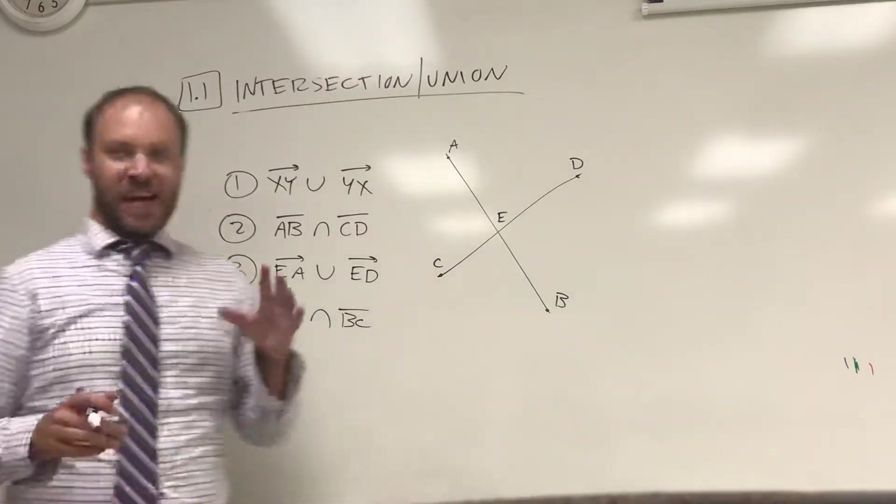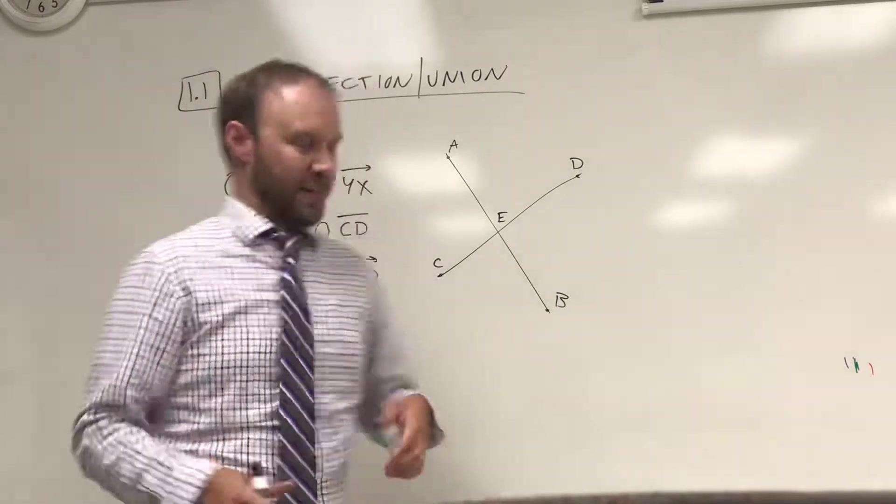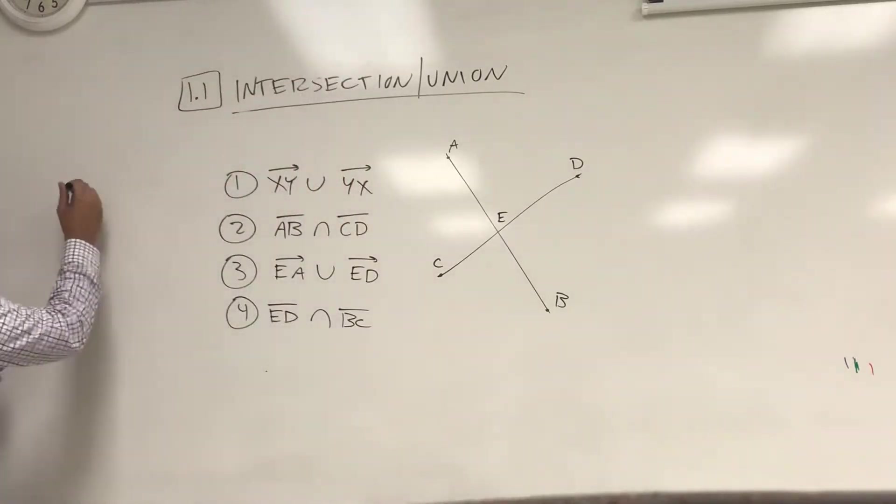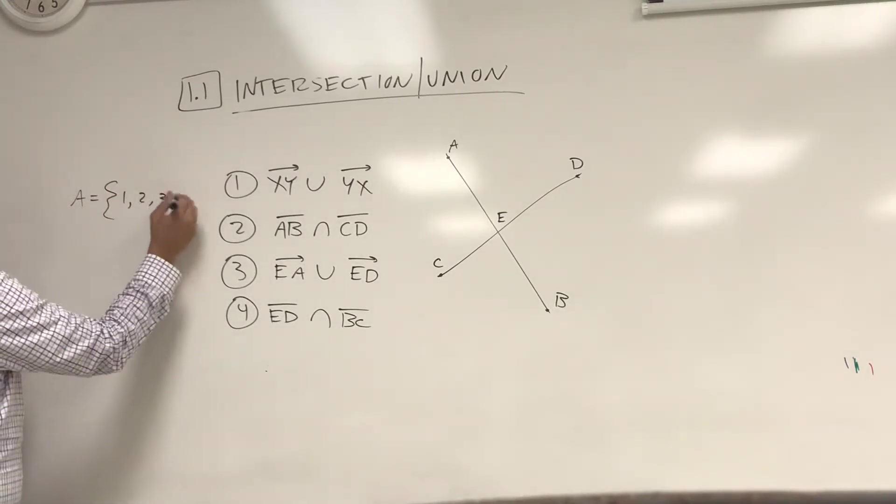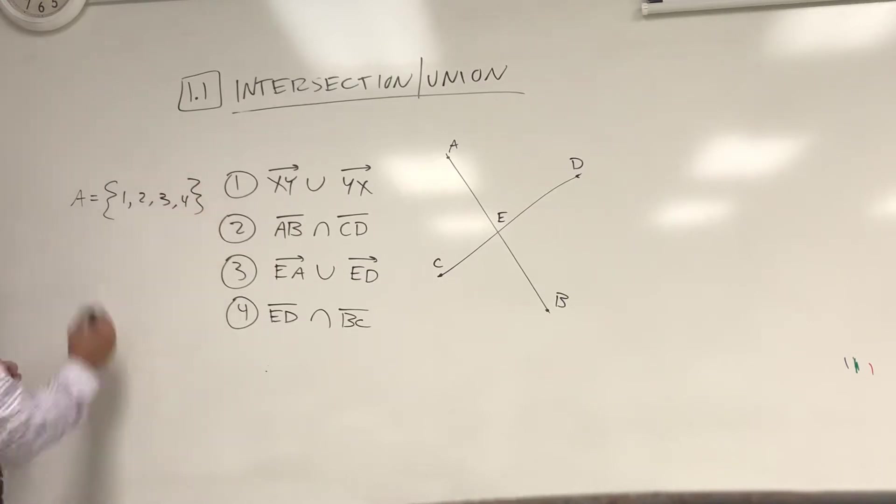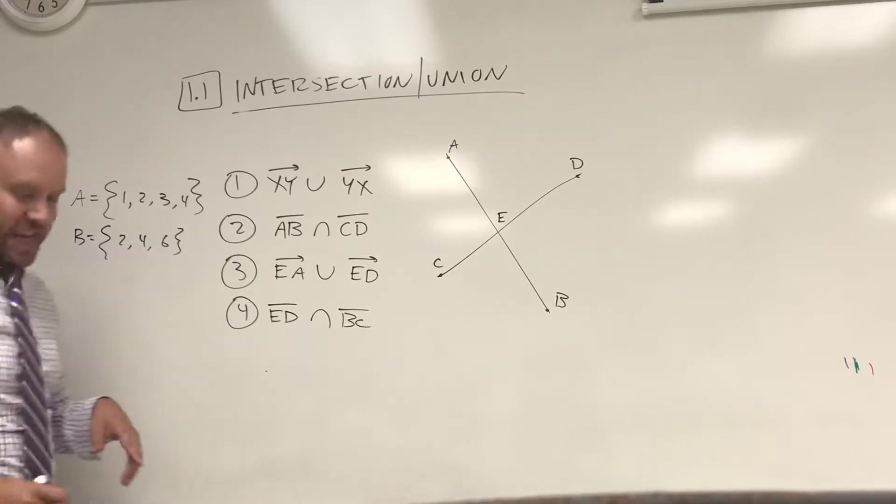A couple of things here. This actually comes out of something called set theory where you're dealing with different collections of things. For example, I can have set A which is the numbers 1, 2, 3, and 4, and I can have set B which is the numbers 2, 4, and 6.